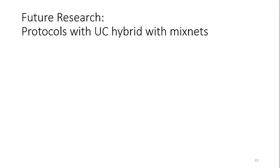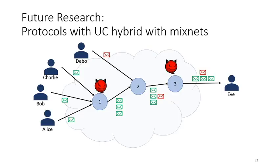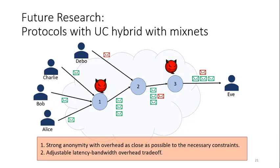As our next step, we are trying to build a protocol that is a hybrid of user coordination and MixNet techniques. We are trying to achieve strong anonymity with overhead as close as possible to the necessary constraints our paper mentions. We also want an adjustable latency and bandwidth overhead tradeoff — meaning, depending on the requirement, you can tune for low latency with high bandwidth overhead, or low bandwidth with high latency overhead, or a medium balance. Most existing protocols that provide strong anonymity are fixed in terms of latency and bandwidth overhead, but with our new protocol we want it to be adjustable.